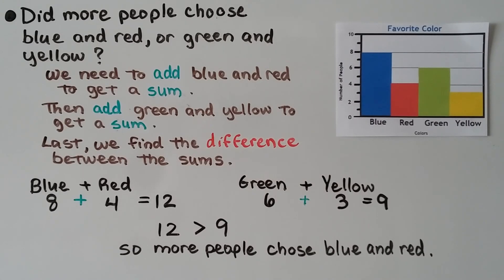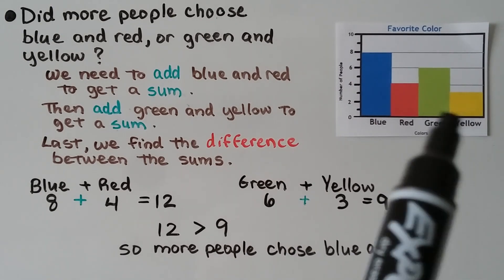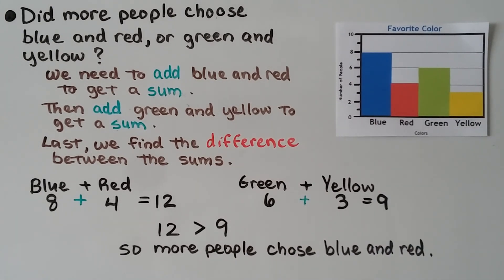Here we have our bar graph about favorite colors. Did more people choose blue and red or green and yellow? That means we need to add blue and red to get a sum, then add green and yellow to get a sum. Let's take a look at the graph.